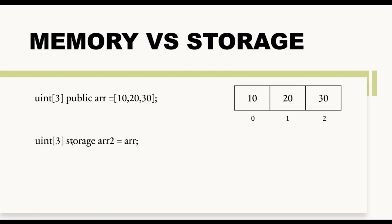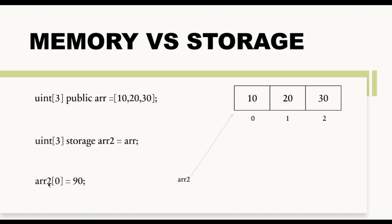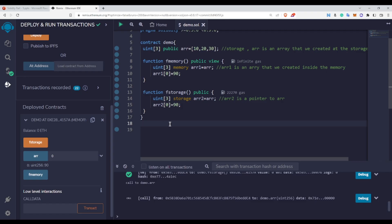When we used the storage keyword in fStorage and assigned ARR to ARR2, ARR2 is not a new array — it is a pointer to the array created at the storage area. When we made changes to ARR2, those changes were reflected in the original ARR array at the contract level. No new array was created, which is why when we called ARR at index 0, the value was changed — we can see this difference clearly in the output.